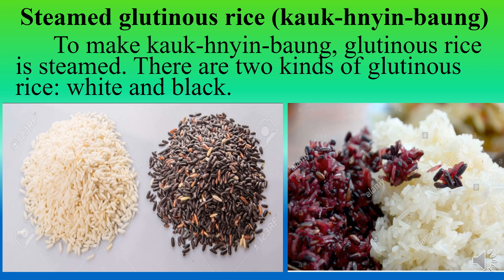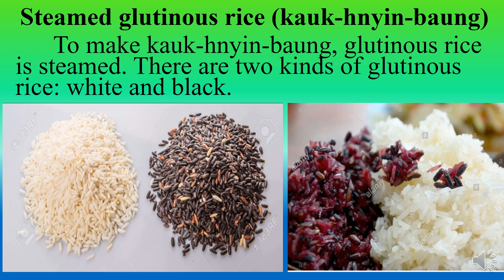There are two kinds of glutinous rice: white and black. The black is delicious and crispy. It can be taken with wine peas, soaked in sesame oil, or with a sprinkling of shredded coconut and a pinch of roasted brown sesame powder with salt.